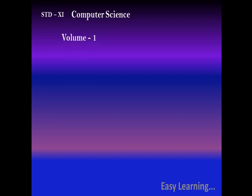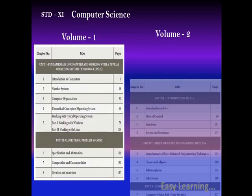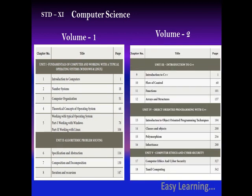As you know, in 11th standard you learnt two volumes of books with five units: the first unit was Fundamentals of Computer, the second unit was Algorithmic Problem Solving, the third unit was Introduction to C++, the fourth unit was Object-Oriented Programming, and the fifth unit was Computer Ethics and Cyber Security.